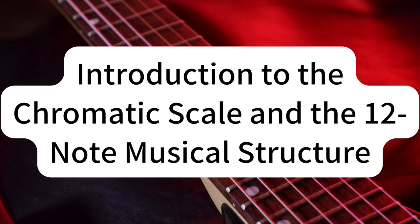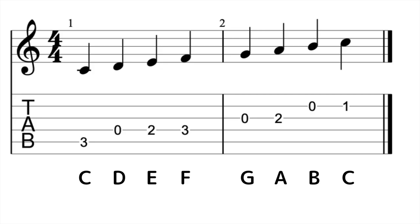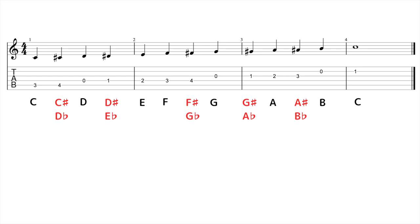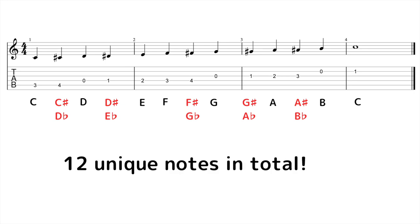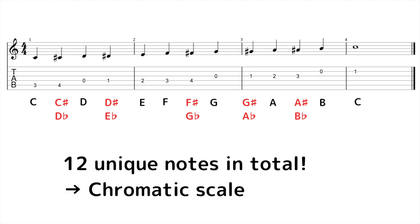In Western music, we have a total of 12 distinct notes. We start with our seven basic notes — C, D, E, F, G, A, and B — then we have five additional notes from the sharps and flats: C-sharp or D-flat, D-sharp or E-flat, F-sharp or G-flat, G-sharp or A-flat, and A-sharp or B-flat. That gives us 12 unique notes in total. This collection of 12 notes is often referred to as the chromatic scale, where 'chromatic' comes from the Greek word 'chroma,' meaning color. It's like having a palette of 12 colors to paint your musical picture.